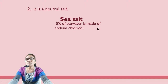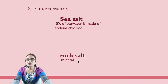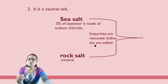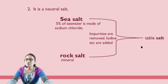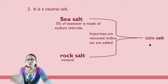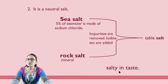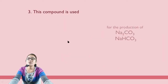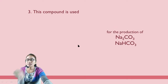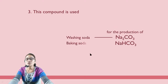About 5% of sea water is made of sodium chloride. Rock salt is also obtained from minerals, and impurities are removed through purification to get table salt with its salty taste. This compound is also used for the production of washing soda as well as baking soda.